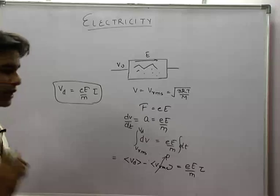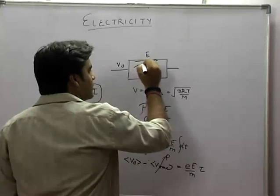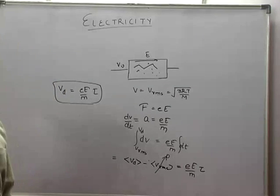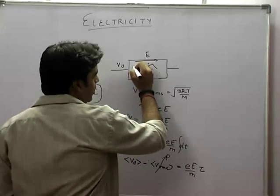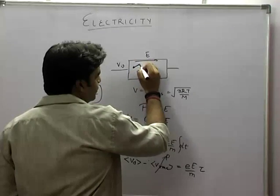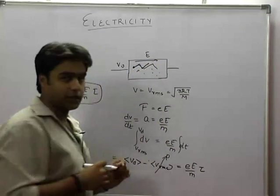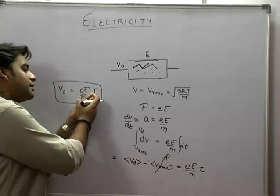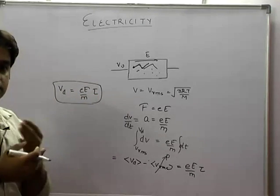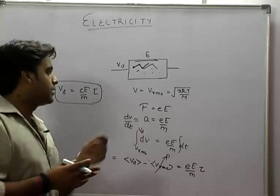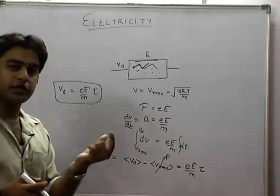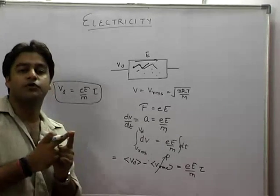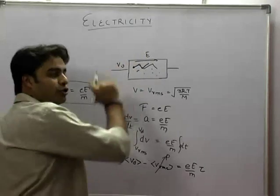What is tau? Tau is the effective free length or free path between two collisions. If a particle is here, it will eventually collide. The time taken to cover this effective free length is tau, or the relaxation time, the time gap between two collisions. When there is a collision, the electron will stop.